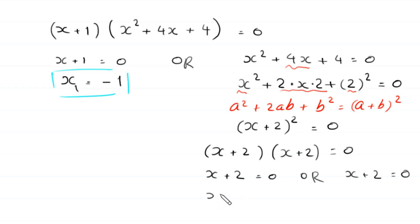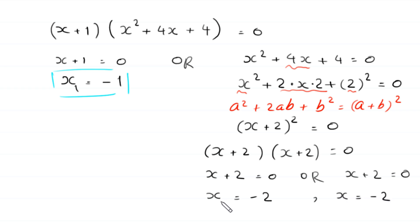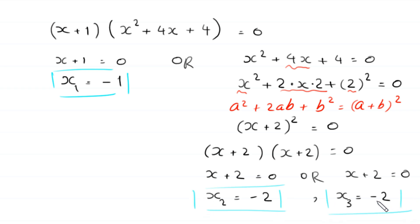From either factor x plus 2 equals 0, we get x equals negative 2. This is the second value of x, and since it's a repeated root, it is also the third value of x. So the three solutions of this equation are x equals negative 1 and x equals negative 2.